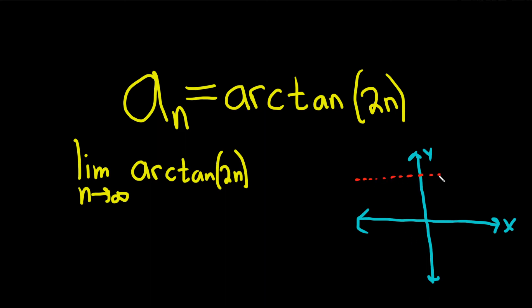So the arctangent of x actually has two horizontal asymptotes. It's got one here at pi over 2 and another one here at negative pi over 2. And the graph of arctangent looks something like this.